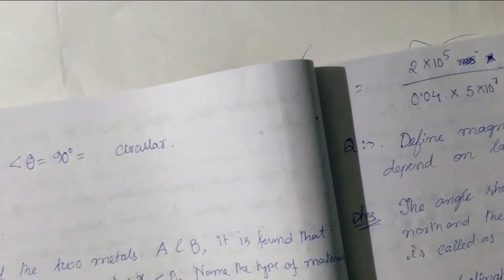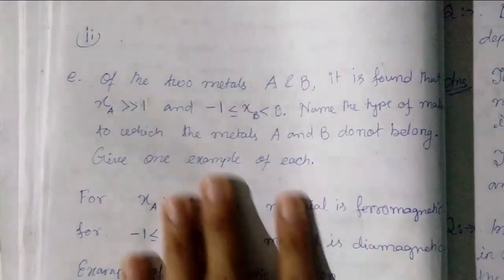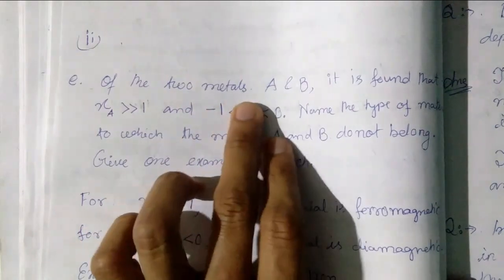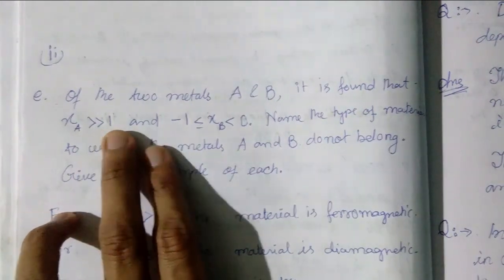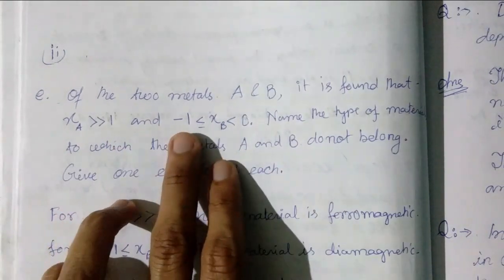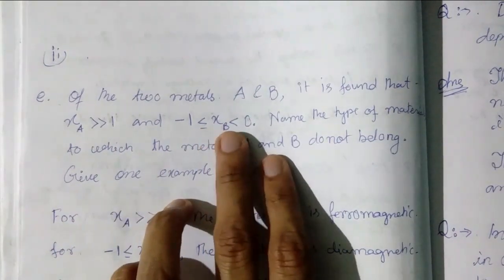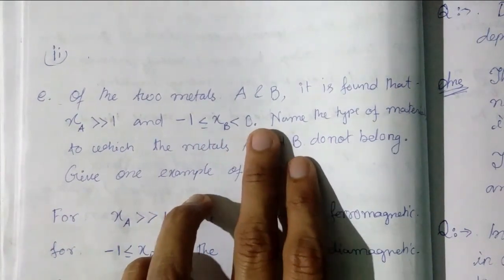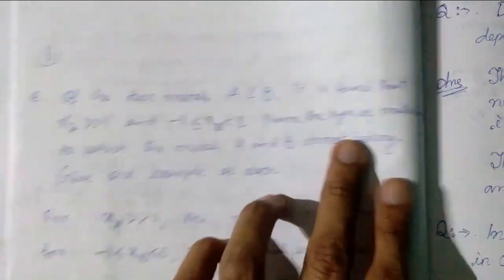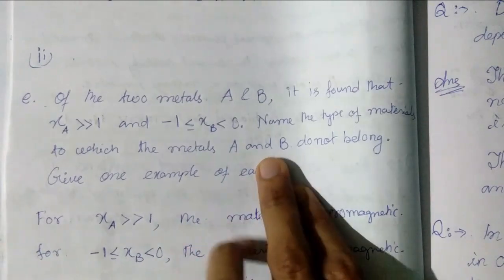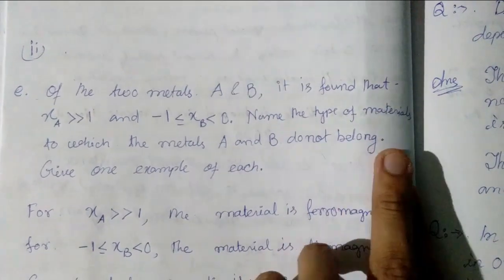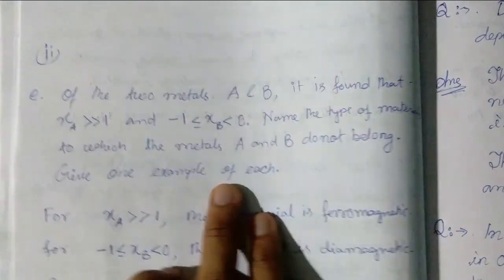So next question. The answer of 2 metals A and B, it is found that susceptibility is greater than 1 and minus 1 is less than susceptibility or less than 0. Then name the material to which the metals A and B belong. Give one example of this.